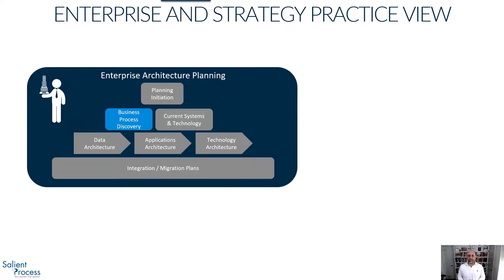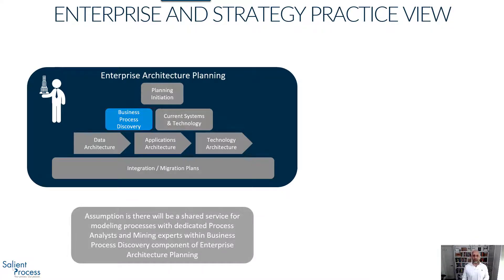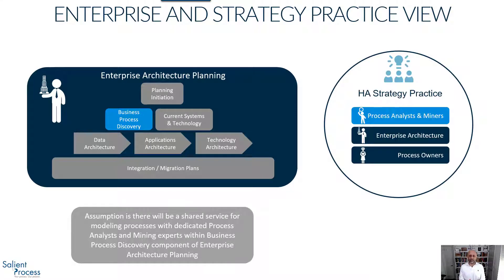Before we dig into how an oversight committee works, let's step back and define how process modeling and mining should be structured from an organizational perspective. This process discovery role is one of the most important components organizations need to succeed at hyperautomation. If we look at a typical enterprise architecture planning structure, business process discovery fits in there nicely — typically as a shared service with process analysts or miners doing the process discovery and mining and relating that back to the rest of the enterprise. The hyperautomation strategy practice has process analysts more focused on specific hyperautomation projects, creating both as-is and to-be process models and determining which parts of those processes are suitable for automation. Much of the grunt work of process discovery can be accomplished by process mining now; however, process analysts provide that last-mile infrastructure.